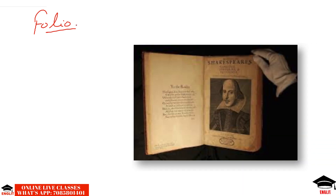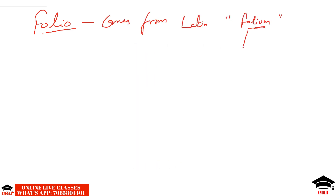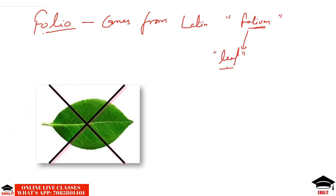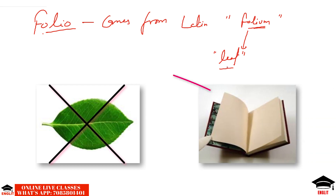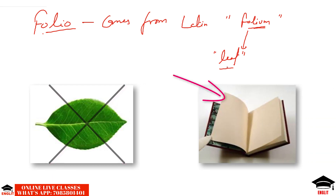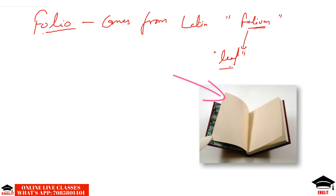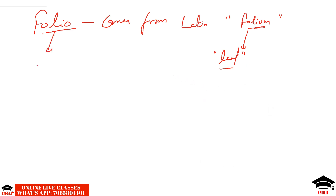We've always heard or read that Shakespeare's works were published in the folio in 1623. Let's first understand what kind of book or printed sheet a folio is. The word folio comes from the Latin word folium, which means a leaf — not a leaf of a tree, but a leaf of a book. A piece of paper in a book which has two sides is called a leaf. A folio is made by folding a printer's sheet once.